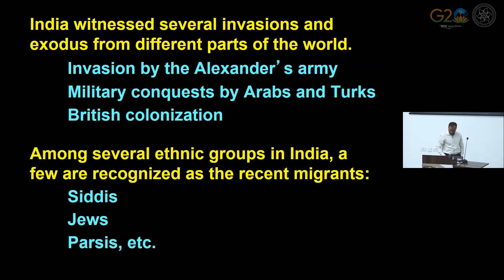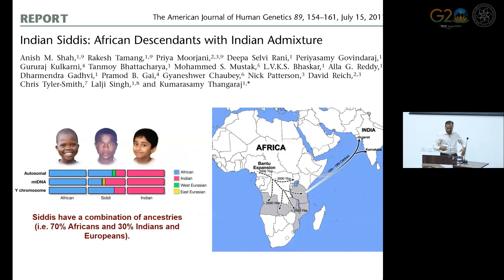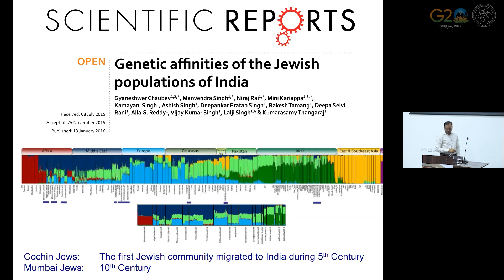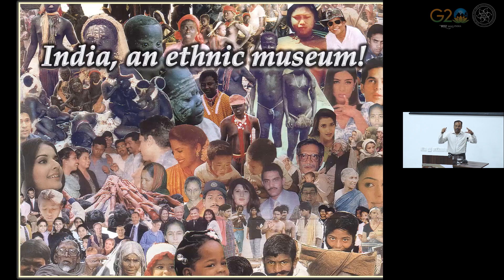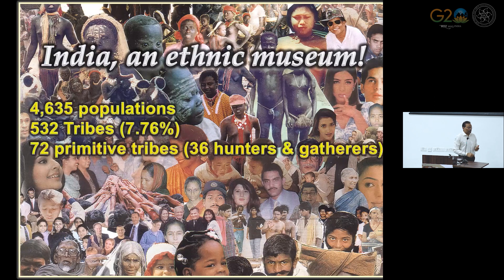To give examples: the Parsis who migrated about 400 years ago show a lot of admixture. The Indian Jewish community, as you can see, mostly looks like Indians because of genome admixture. Looking at the Parsi data, the green color representing Indian genome is still evident. So all of these together make India very complex in terms of diversity, with 4,635 population groups including tribes and primitive tribes.